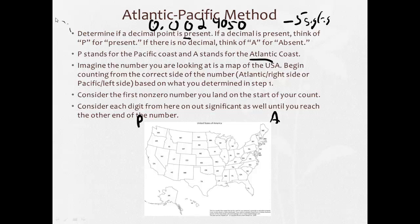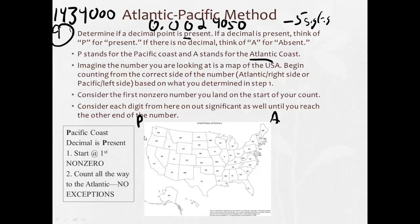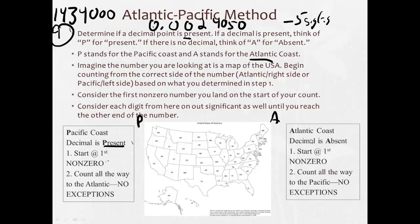Let's try another example: 1,434,000 with no decimal. The decimal is absent, so we use the Atlantic side (right). Starting from the right, we skip the trailing zeros until the first non-zero digit, then count to the end on the left: 1, 2, 3, 4 significant figures. To summarize: decimal present — start Pacific (left) at first non-zero and count to the end. Decimal absent — start Atlantic (right) at first non-zero and count to the end.